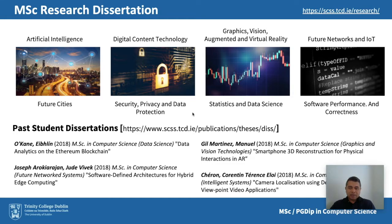Research topics tend to be aligned with the research of the 65-plus academics in the school. Areas of interest include artificial intelligence, future cities, digital content technology, cybersecurity, graphics, vision, augmented and virtual reality, statistics, data science, future networks, Internet of Things, and software performance and correctness. Some examples of past student research dissertations are listed, and past projects are publicly available on the school website at the link provided. You can find more detail there.